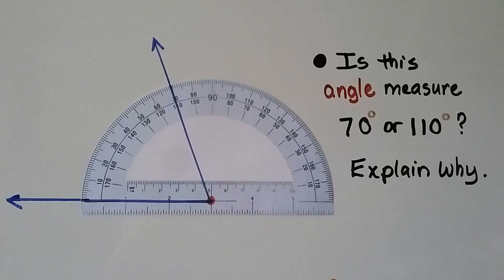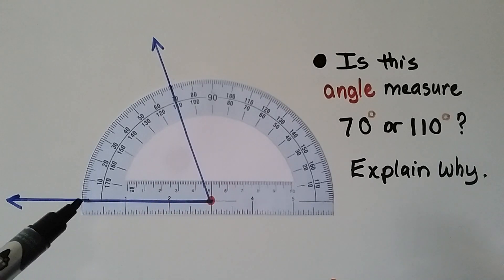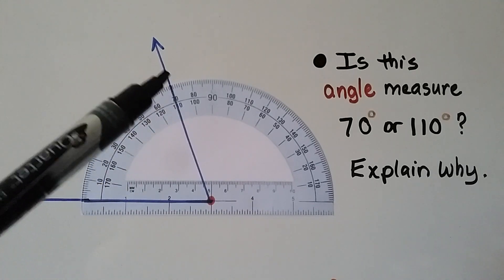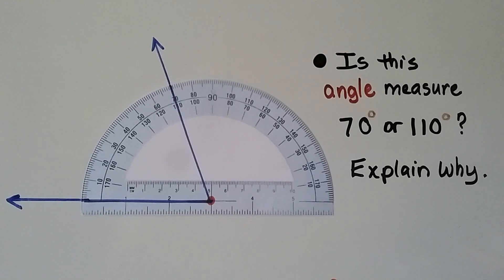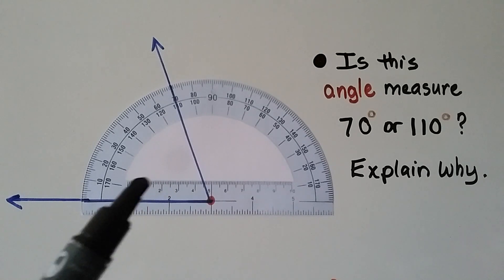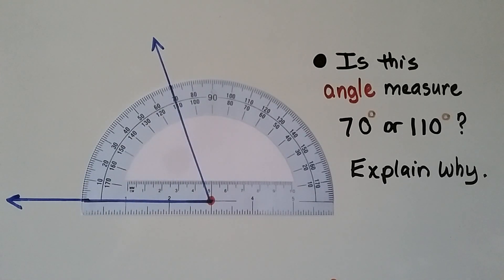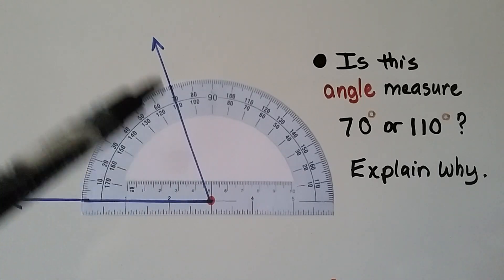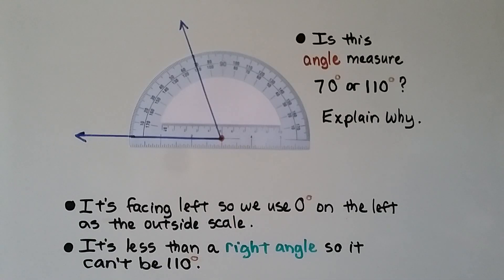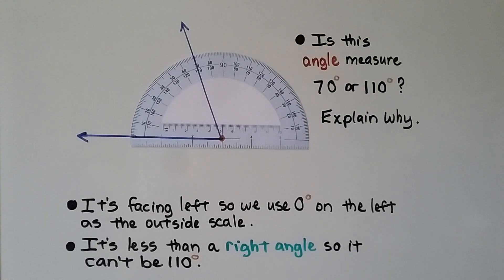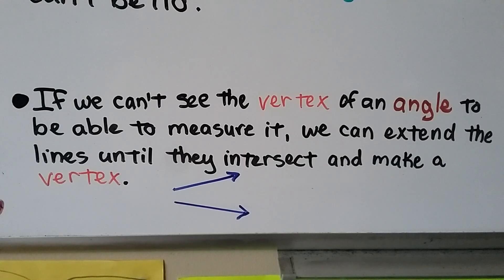Take a look at this angle — does it measure 70 degrees or 110 degrees? It's lined up at the center point, aligned with zero, and falls between 60 and 80 on one scale and between 100 and 120 on the other. The answer is 70 degrees, because this is an acute angle — it's less than a right angle, so it can't be 110. It's facing left, so we use zero on the left with the outside scale.